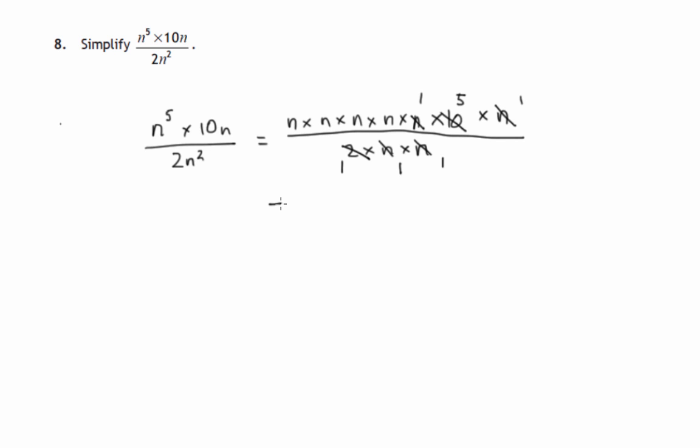That's all the cancelling that we can do. On the top line, we're left with 5 times n to the 4. On the bottom line, we're left with 1. So the final answer is 5n to the power 4.